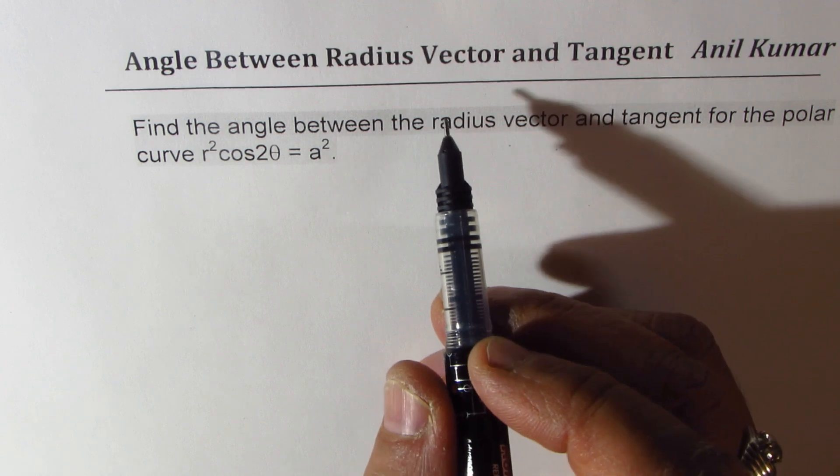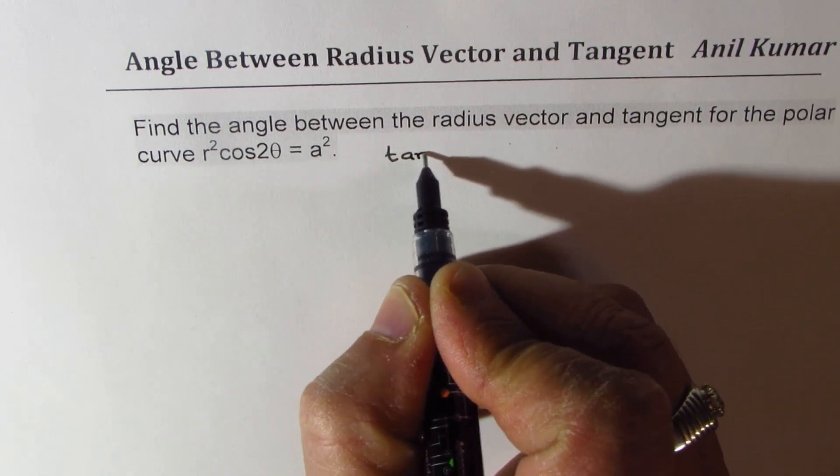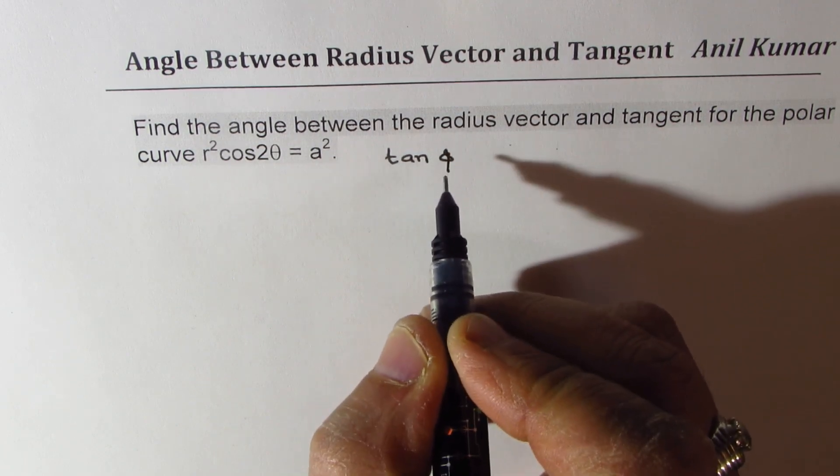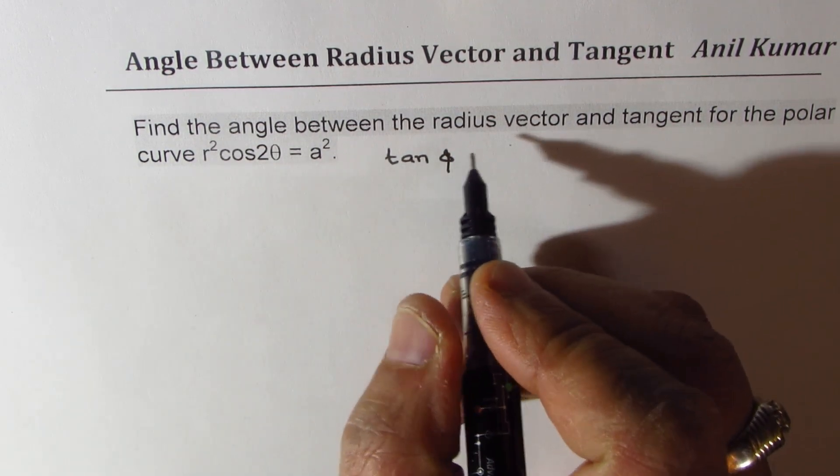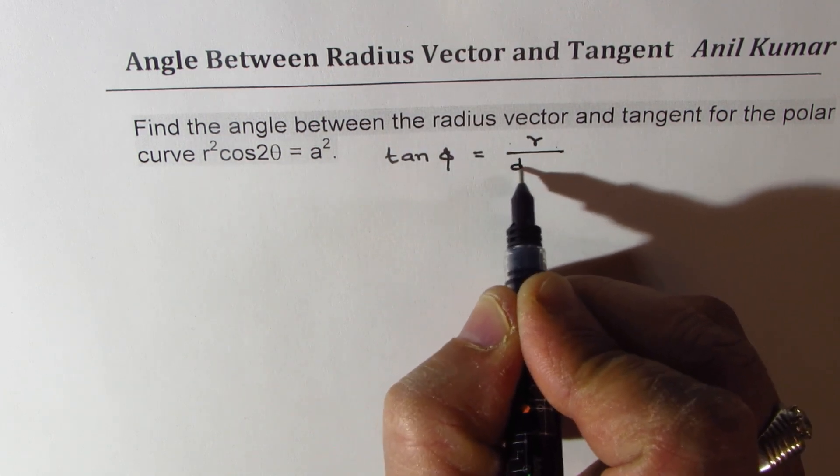The formula to find the angle is tan φ, where φ is the angle between radius vector and the tangent, is equal to r over dr/dθ.